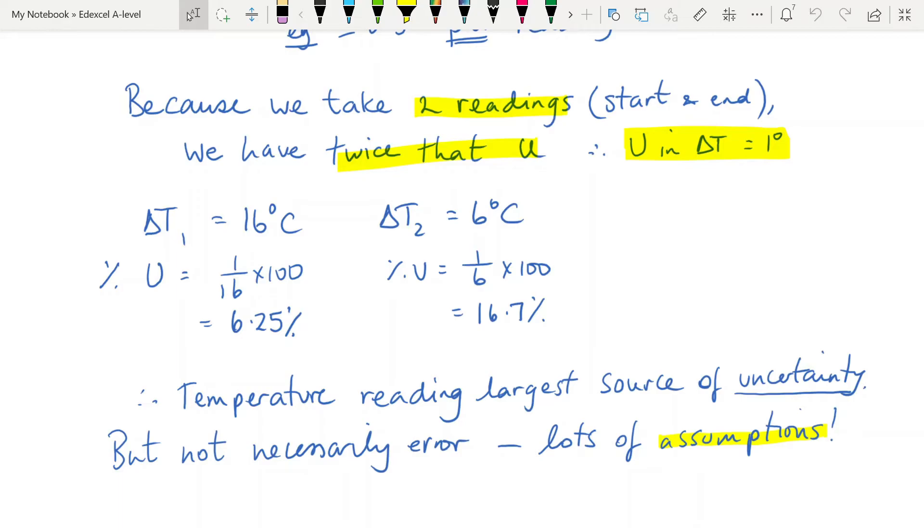The first change in temperature was 16 degrees. That was how much the original water fell. And so if we put 1 degree over 16 times 100, we end up with a percentage uncertainty of 6.25%. The second change in temperature we had was 6 degrees. That was from the ice heating up from 0 to 6. That gives us a much bigger percentage uncertainty. Because we were multiplying these quantities in our equation, we would end up with a very large uncertainty in our temperature reading. So it is the largest source of uncertainty here, but not necessarily the largest source of error.